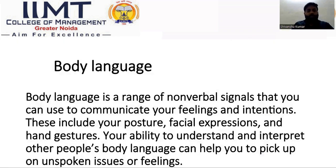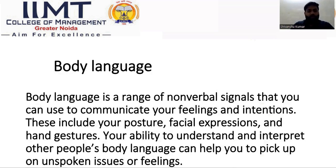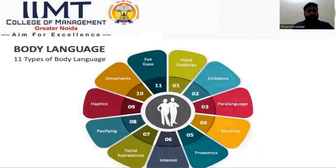Body language is a range of nonverbal signals used to communicate feelings or intentions, including posture, facial expressions, and hand gestures. Your ability to understand and interpret other people's body language helps you pick up on unspoken issues or feelings. There are 11 types of body language: eye gaze, hand gestures, emblems, paralanguage, blocking, proxemics, interest, facial expressions, pacifying, haptics, and ornaments.